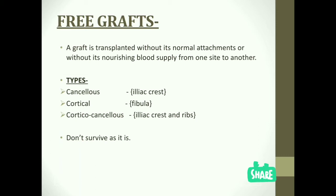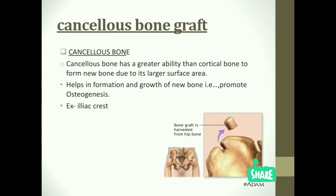Free grafts are of three types: cancellous, cortical, and corticocancellous. In cancellous bone grafting, cancellous bone is used because it has a greater ability than cortical bone to form new bone, due to its larger surface area. It also promotes osteogenesis by helping in the formation and growth of new bone. An example is the iliac crest.